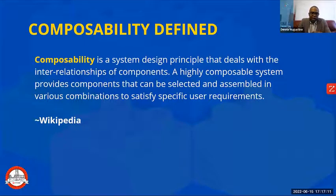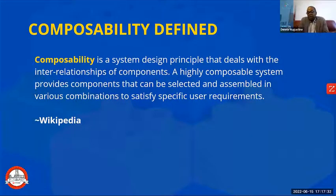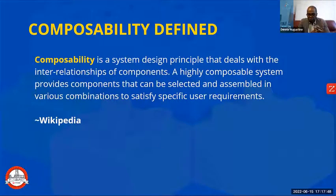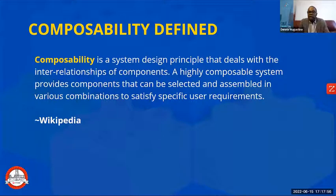On the screen now we have a definition from Wikipedia — the source of all truth. Composability is a system design principle that deals with the interrelationships of components. A highly composable system provides components that can be selected and assembled in various combinations to satisfy specific user requirements. It's taking various components and putting them together in a system — and that system does not necessarily mean a software system.